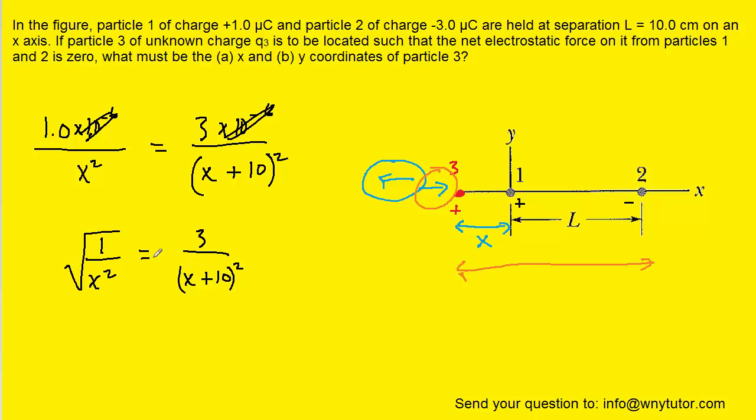Now to solve for x, we could actually take the square root of both sides. We could then cross multiply so that we have root 3 x is equal to x plus 10. Let's subtract the x over to the other side.